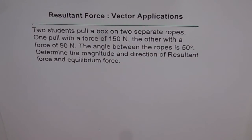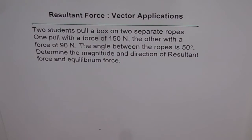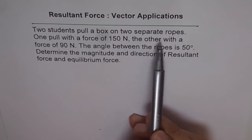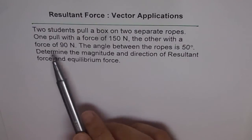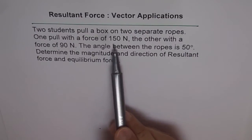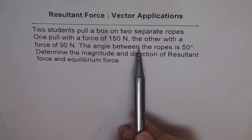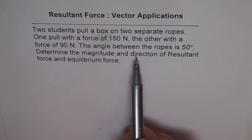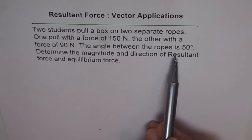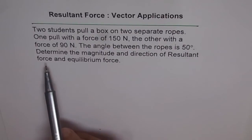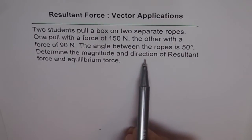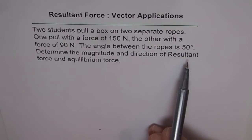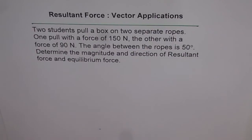Resultant force vector applications. Two students pull a box on two separate ropes. One pulls with a force of 150 Newtons, the other with a force of 90 Newtons. The angle between the ropes is 50 degrees. Determine the magnitude and direction of the resultant force and equilibrium force.